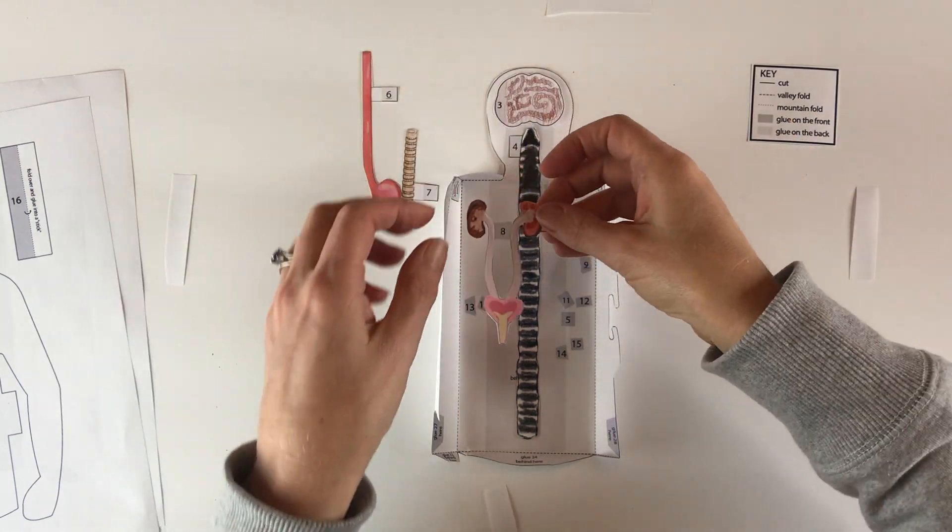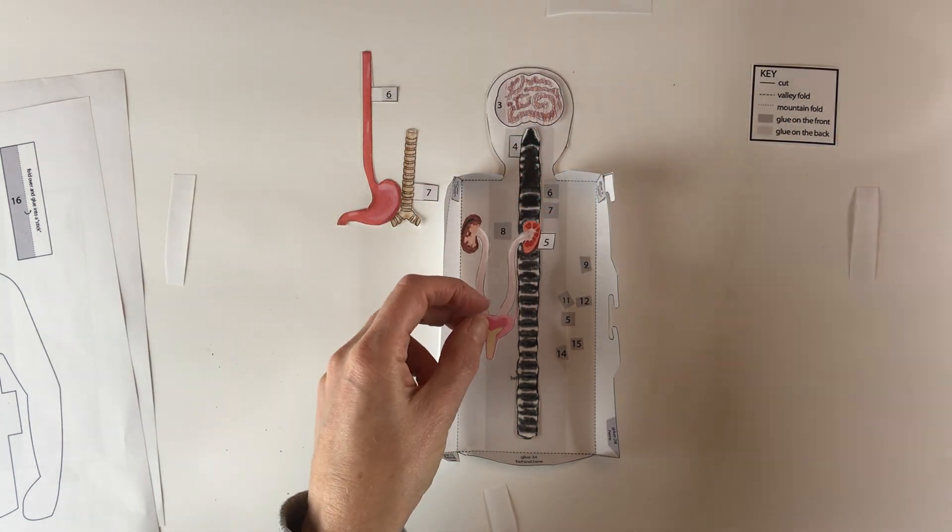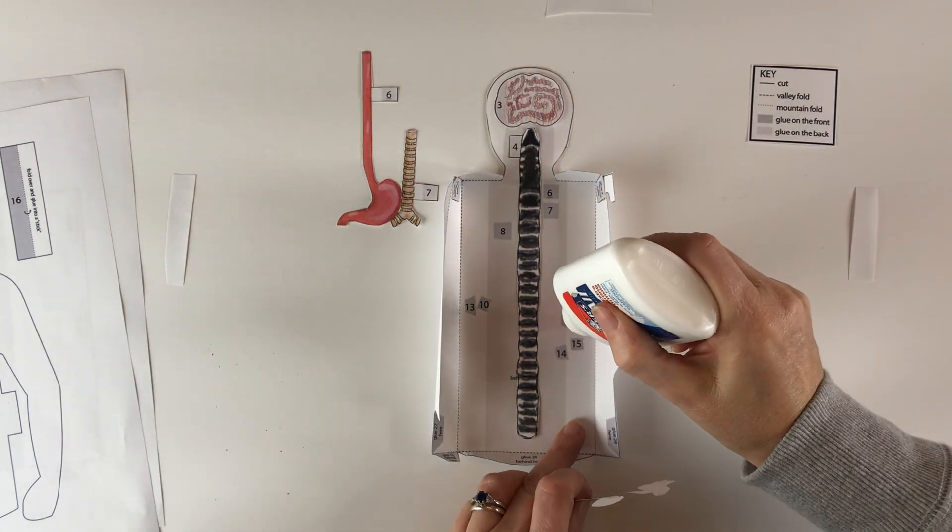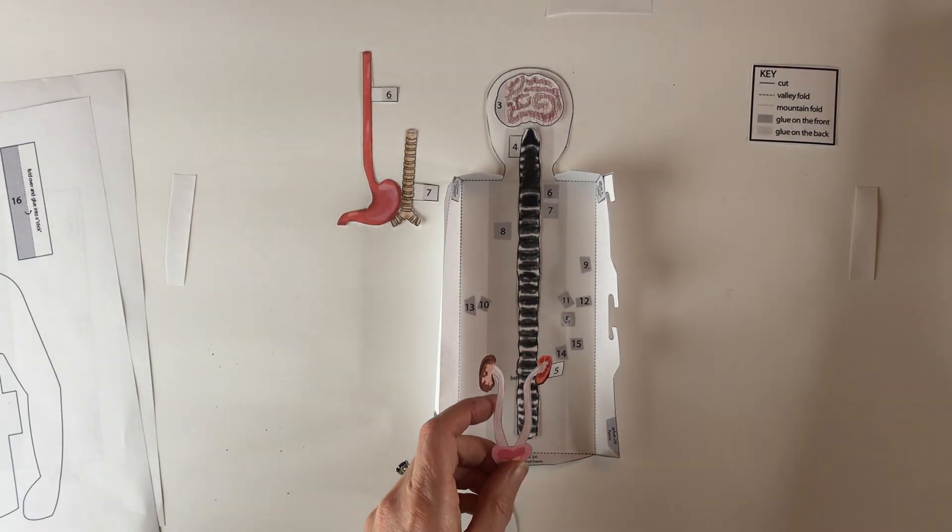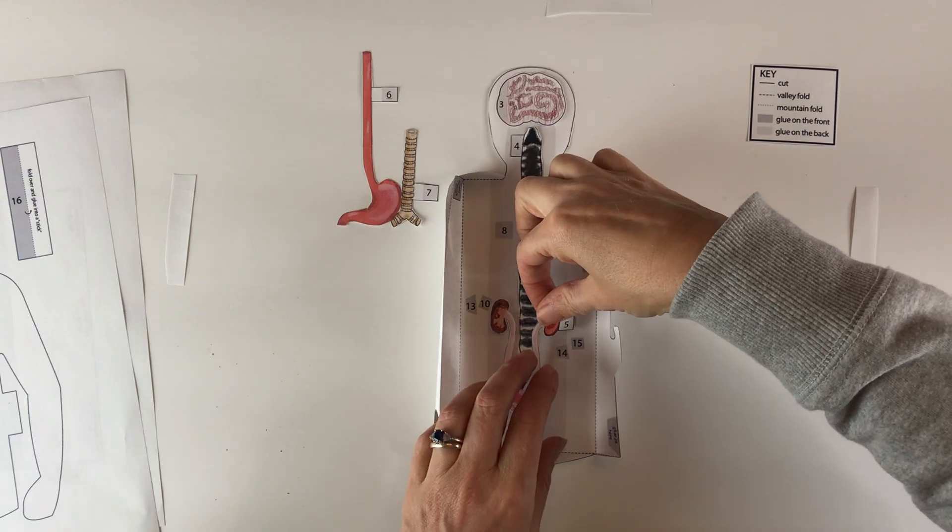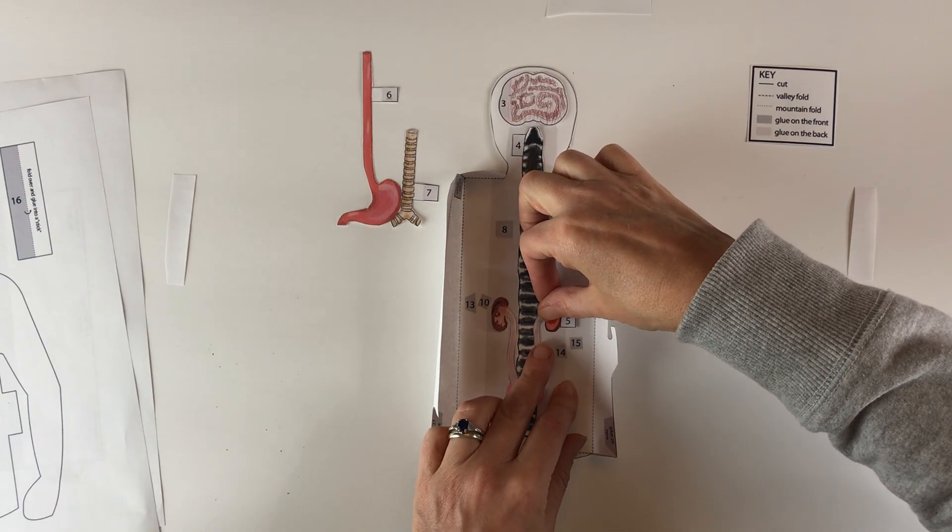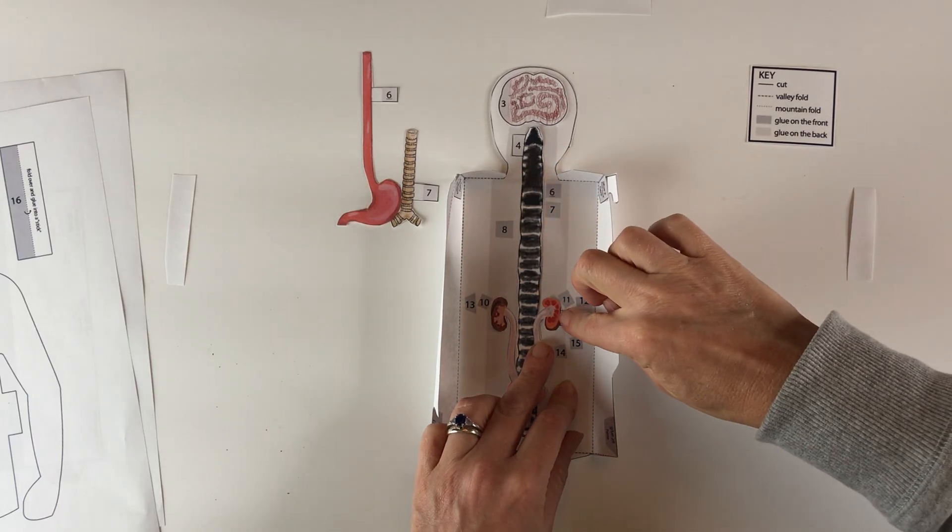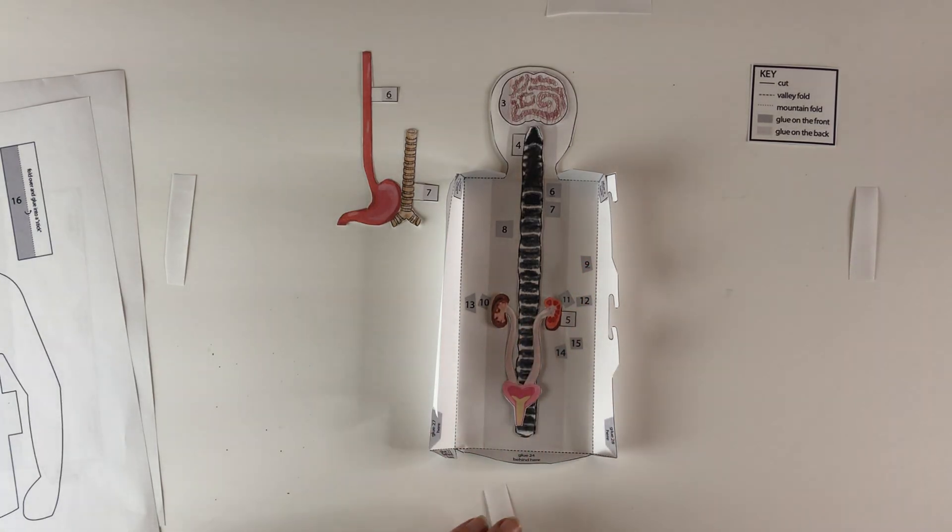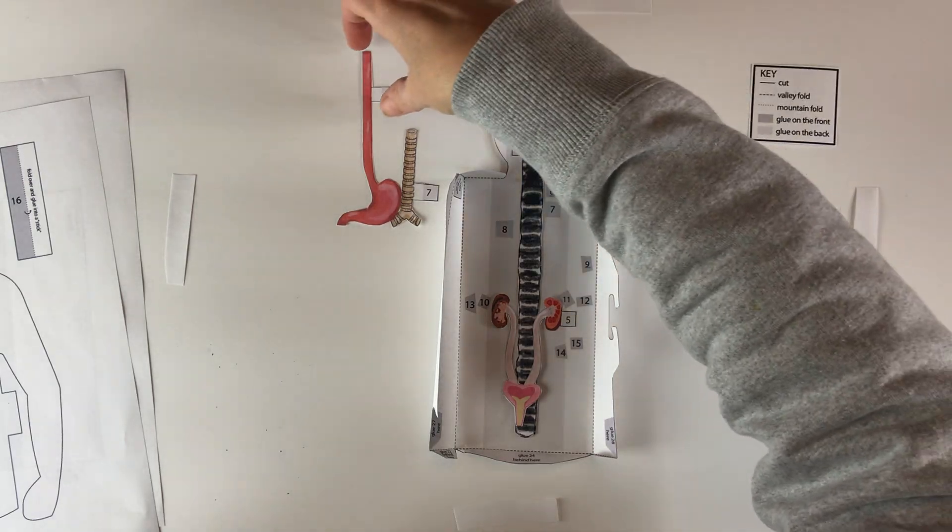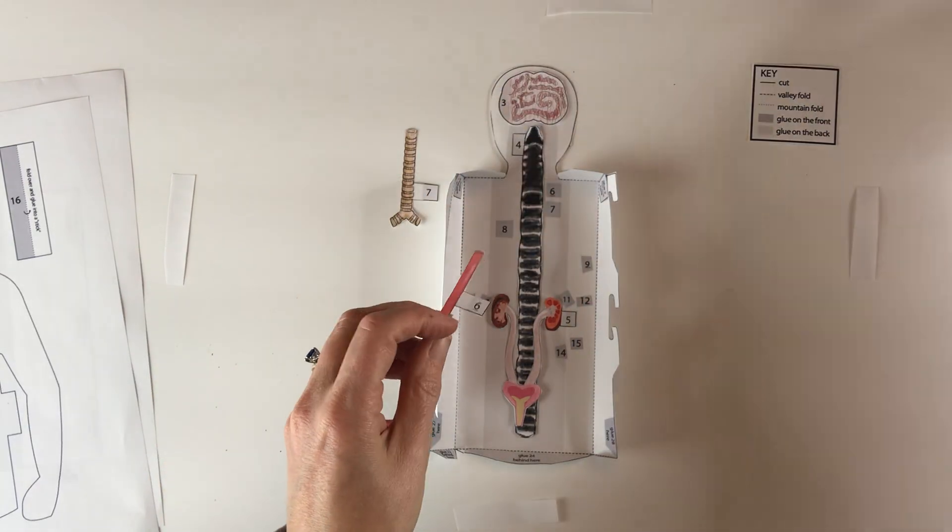Next up is the kidneys and bladder. Now the advantage to the numbering system here is that by following it in order as you glue, you more or less get the organs back to front as they are in the human body. For example, the kidneys sit toward the back of the body, and so the way this is being glued, they will wind up towards the back in this model.